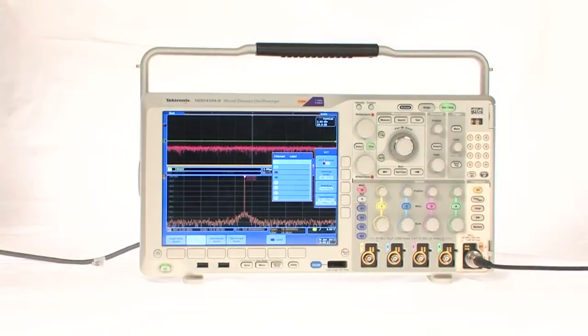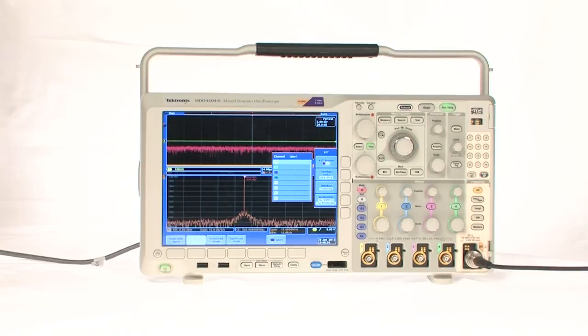Today we're talking about using the MDO4000 mixed domain oscilloscopes for RF measurements. This will be a short demonstration to show the differences between a scope FFT and the operation of the integrated spectrum analyzer in the MDO.